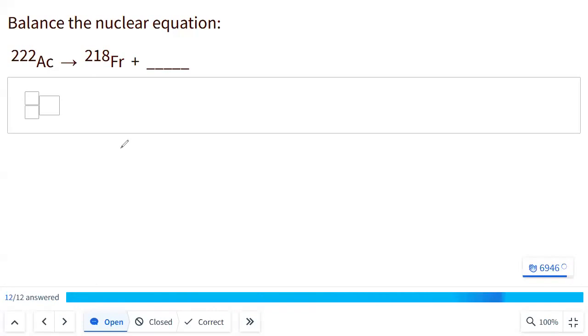So what we need for this is context for the two elements. Actinium is element number 89, and francium is element number 87. So if we're trying to figure out what's missing, again, thinking about conservation. The total is 222. I already have 218. 222 minus 218 is 4. 89 minus 87 is 2.